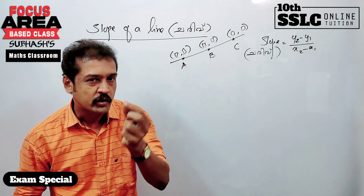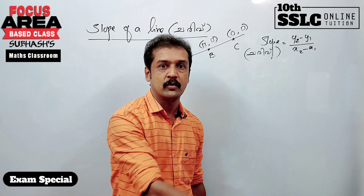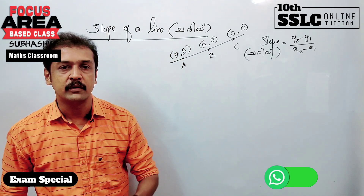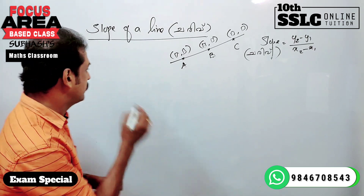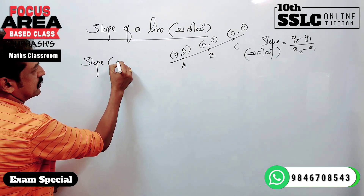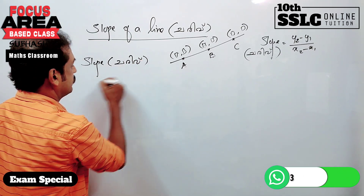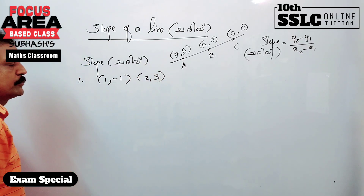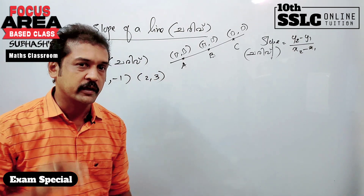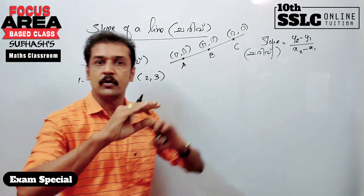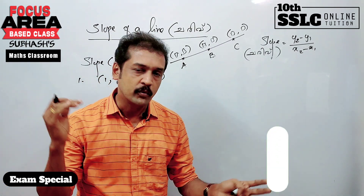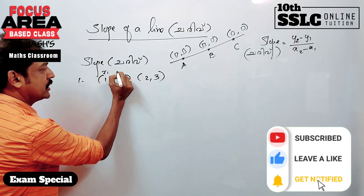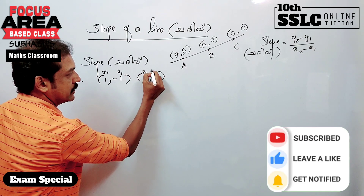Now, if you want to learn some problems, we will learn some problems. The first problem: find the slope of the points (1, -1) and (2, 3). We will find the slope, identifying x1, y1 and x2, y2.